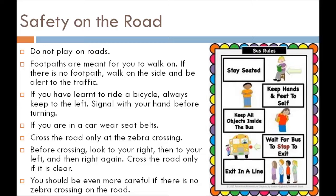Safety on the road. Road pe humein kaun-kaun se safety rules follow karne chahiye? Remember that roads are not meant for playing — playing on the roads can be very dangerous. Footpaths are meant for you to walk on. If there is no footpath, walk on the side and be alert to the traffic. If you have learned to ride a bicycle, always keep to the left. Signal with your hand before turning.